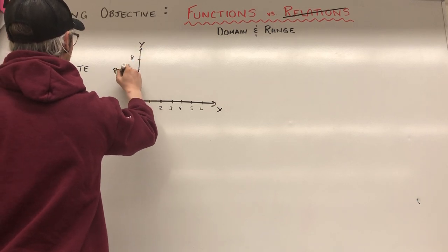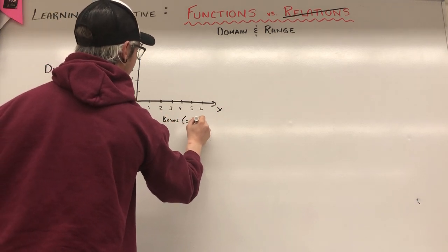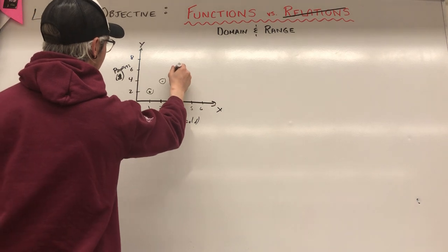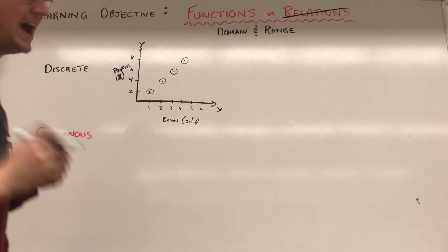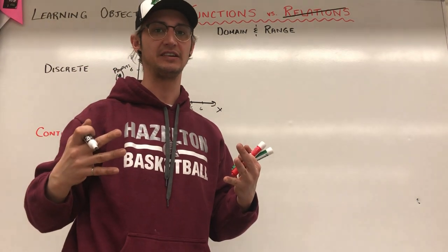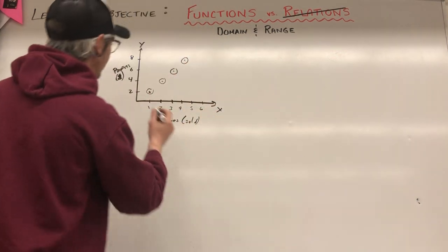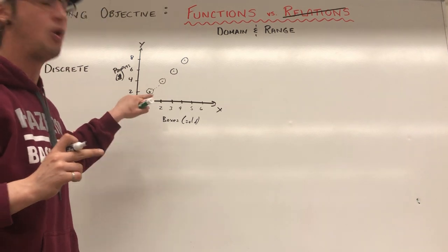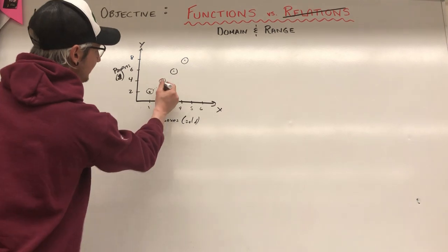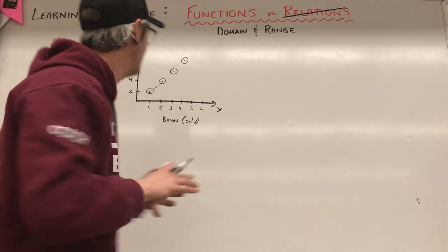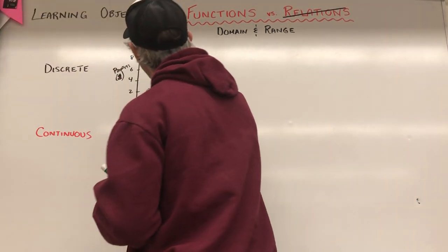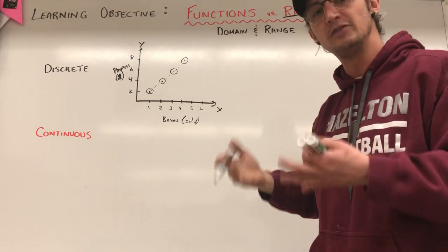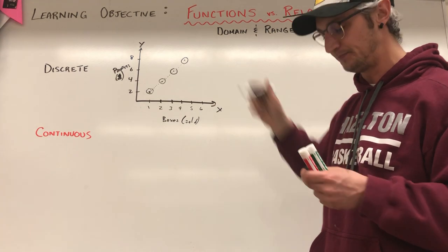So if I sell one box I'm at two dollars profit, two boxes at four dollars, three boxes at six dollars, four boxes at eight dollars. Now I cannot sell half a box or a quarter box — I have to sell a whole box at a time. So I will never have a profit that exists between two and four dollars. I'm never going to make three dollars profit because I can never sell half a box. These are discrete data points because there's no continuity between them.